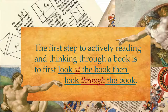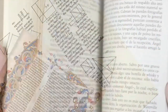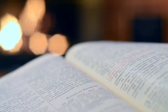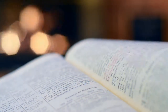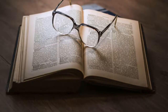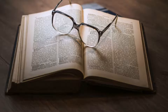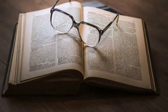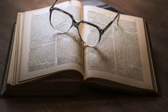The first step to actively reading and thinking through a book is to first look at the book, then look through the book. Looking at a book involves systematically skimming its contents, while looking through the book involves superficially reading it. The goal is to inspect the content, so these two activities are commonly referred to as pre-reading or inspectional reading.